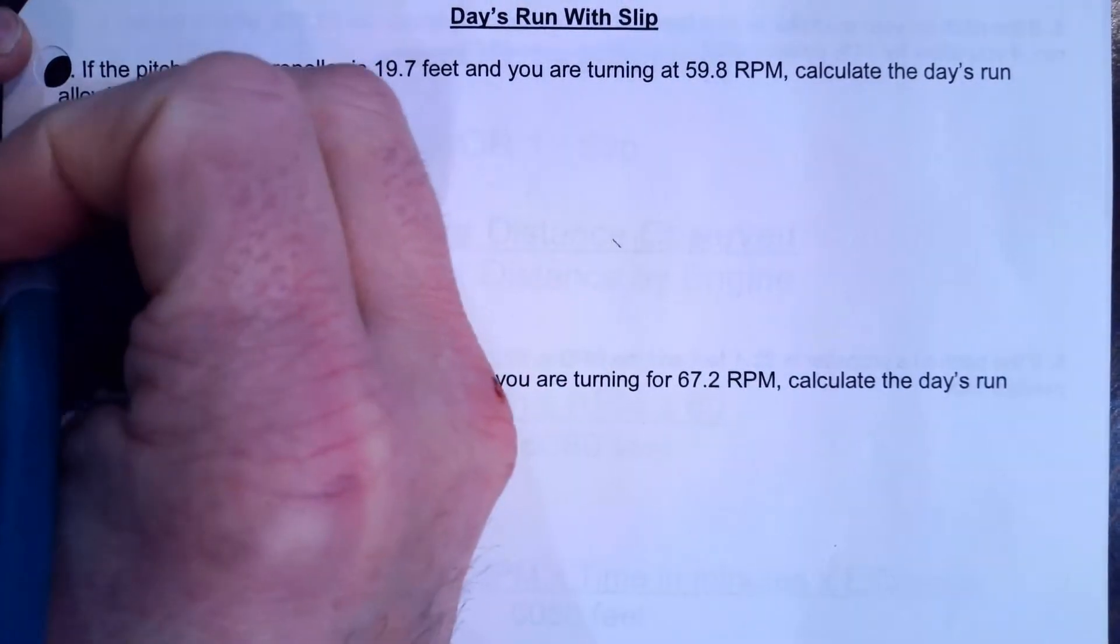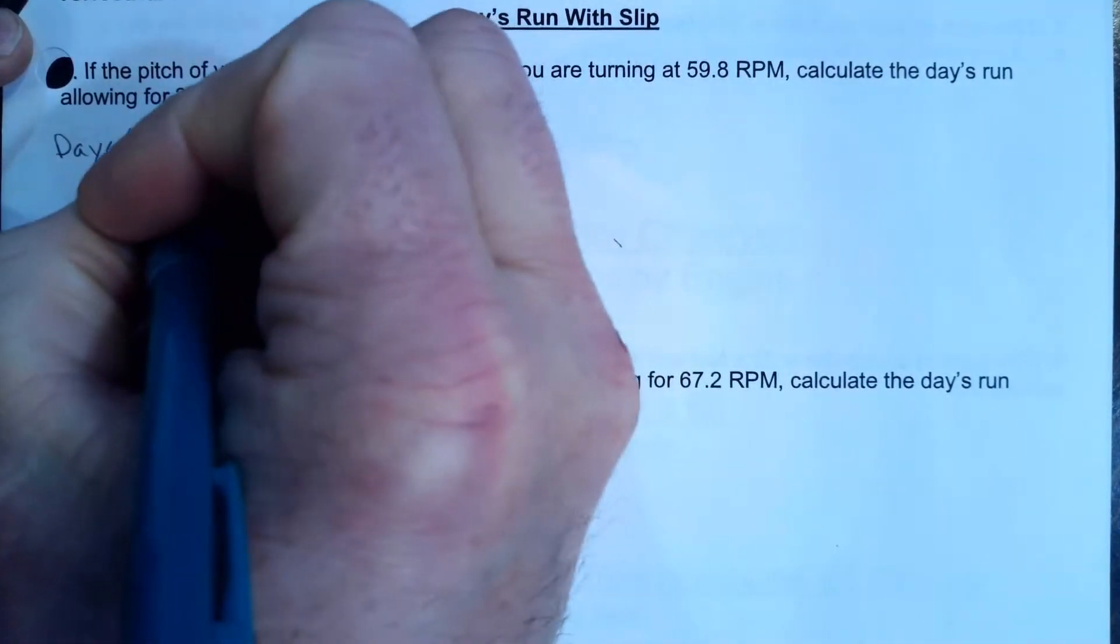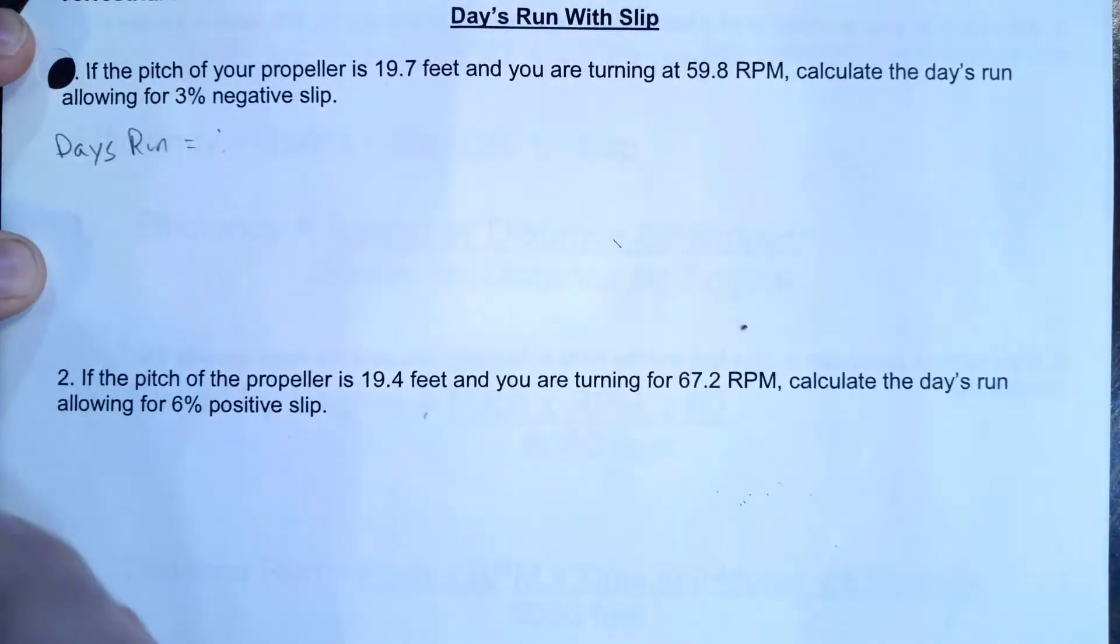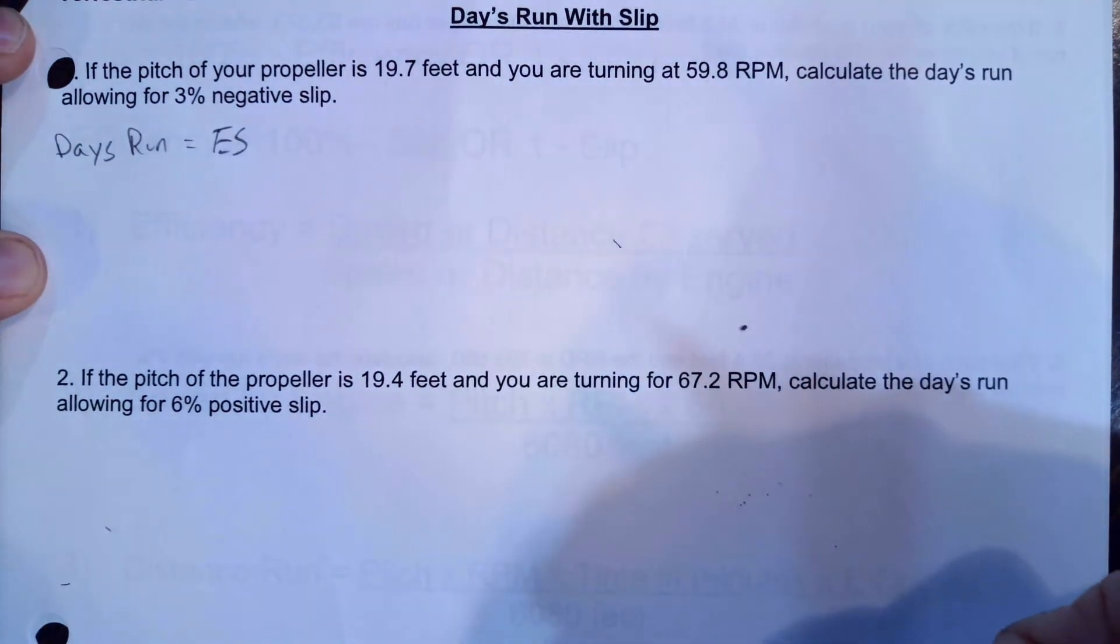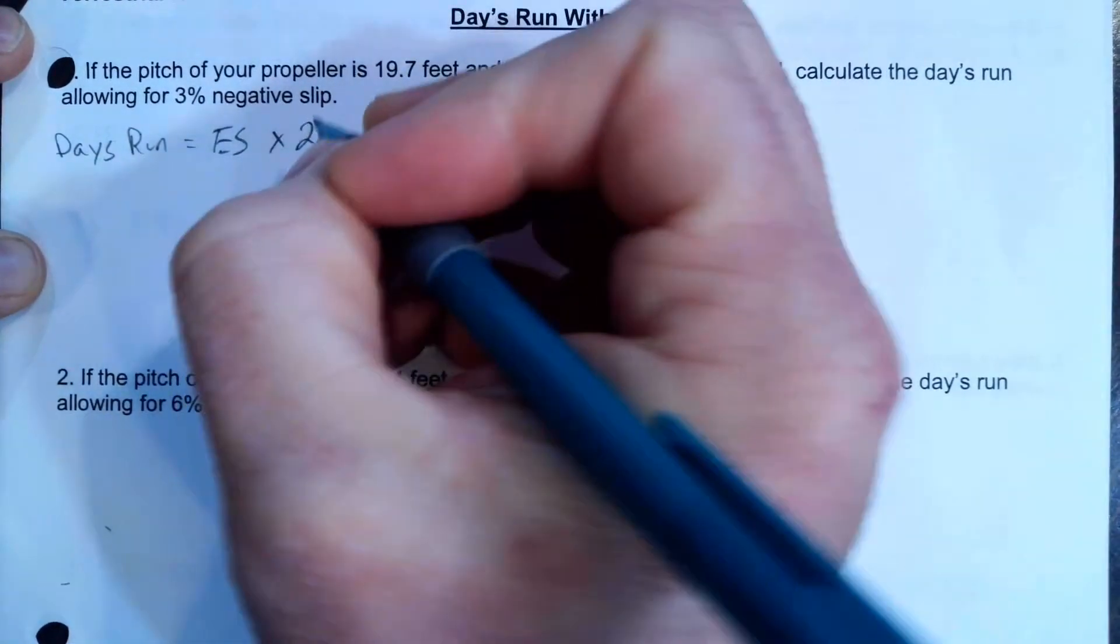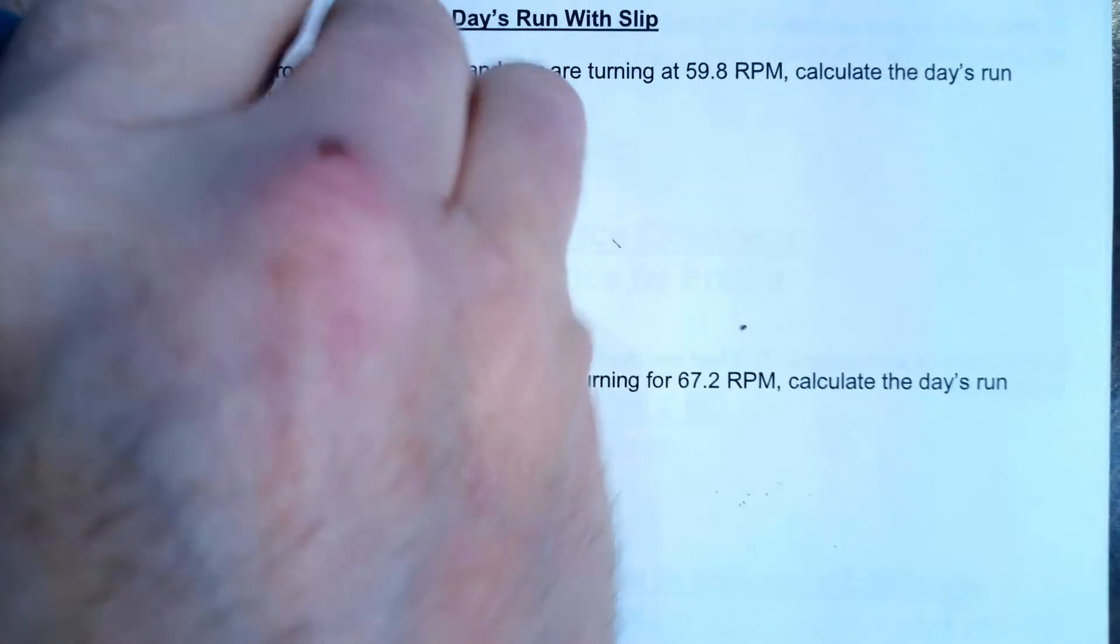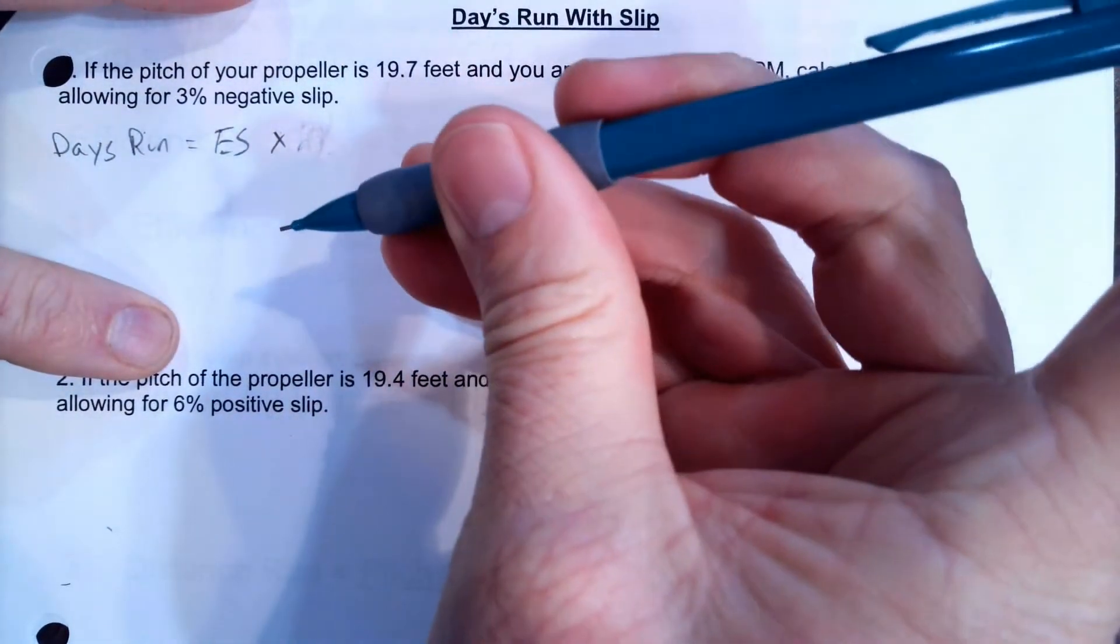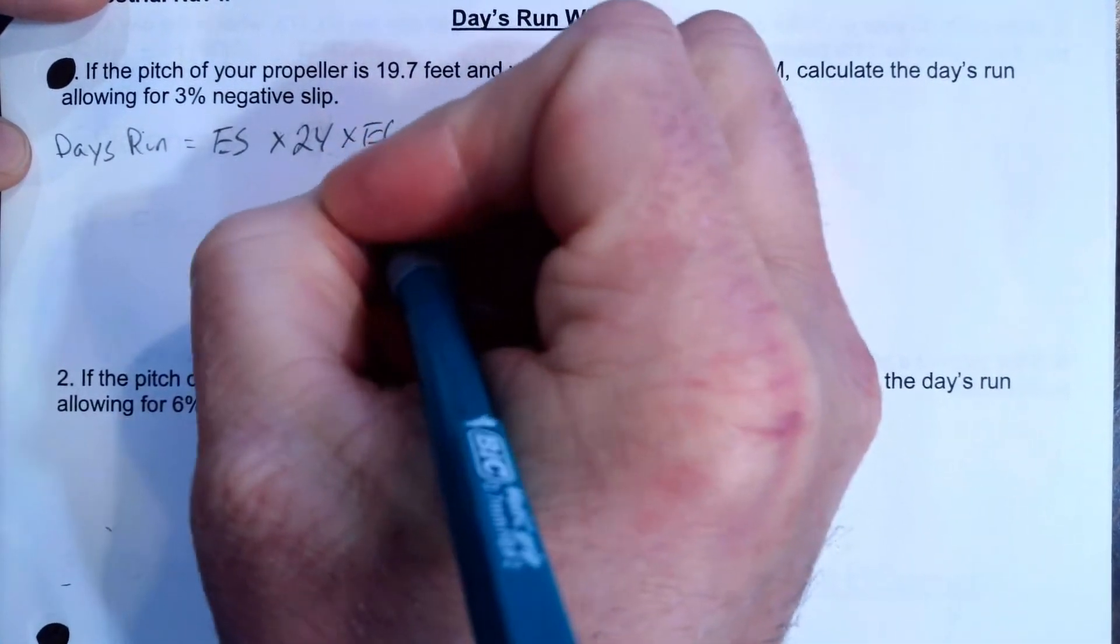So our day's run is going to be equal to the engine speed formula, which is the engine speed in nautical miles per hour, which is in knots, times 24 hours in a day. And let's see, I'm having a little pencil problem here. All right, times 24 hours a day times the efficiency.